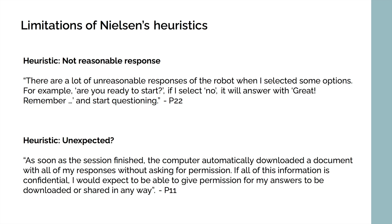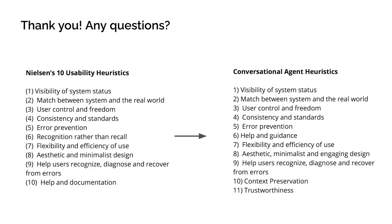One interesting finding we also noticed was that in both phases three and four, Nielsen's heuristics had some limitations in addressing certain usability issues. For example, a few participants in the Nielsen group would find usability issues but did not assign any of Nielsen's heuristics, and they would come up with their own heuristics to apply. Some examples are listed here — one participant noted they didn't receive a reasonable response from the chatbot, and another noted an unexpected response when the computer downloaded their data. We find that the conversational agent heuristics may better capture these issues; for example, the latter issue references a lack of notification about data use, which may relate to the trustworthiness heuristic developed in the conversational agent heuristics.